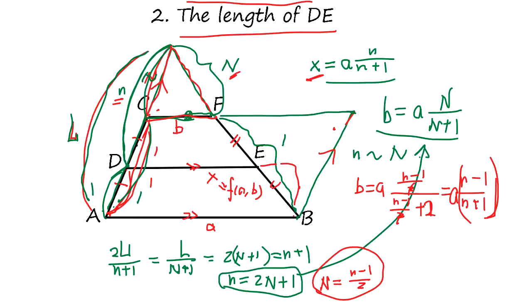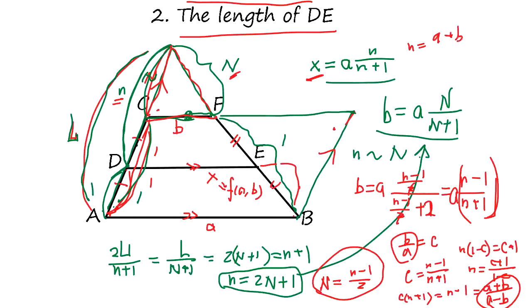So we get n from here. B over A, we say temporary C. C equals n minus 1 over n plus 1, so C times n plus 1 equals n minus 1. So what happens is n times 1 minus C equals C plus 1, so n equals C plus 1 over 1 minus C. C is this, so multiply A both: A minus B over A plus B. So n is A plus B over A minus B. We plug in that...